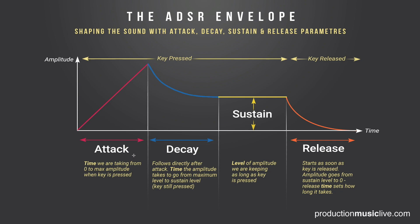Attack determines the time we need to get from zero to our maximum amplitude. So if I'm hitting my piano really hard, that attack time is very quick — very short. Hitting something hard is a very short attack time. Like if we are playing strings, and they are coming in very smooth, like a violin or some other strings, then you have a longer attack time. It takes a while until we are reaching the maximum amplitude of the sound.